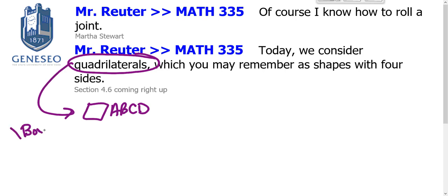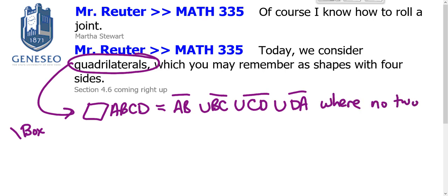For my friends who use LaTeX, this is backslash box. When we talk about quadrilateral ABCD, we mean that is segment AB union segment BC union segment CD union segment DA, where no two of those segments...